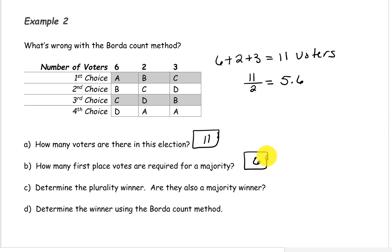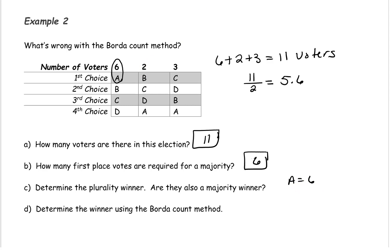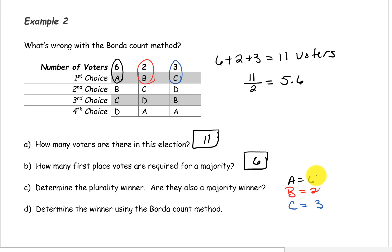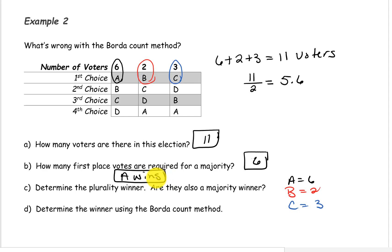Now determine the plurality winner, and are they also the majority winner? We can see that candidate A has 6 first place votes, candidate B has 2 first place votes, and candidate C has 3 first place votes. So the plurality winner would be candidate A. And yes, they are also the majority winner — they do have 6 first place votes.